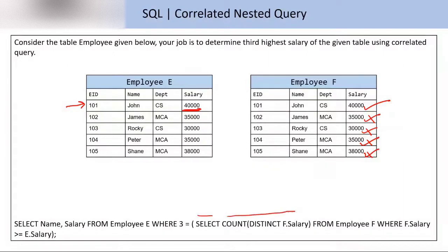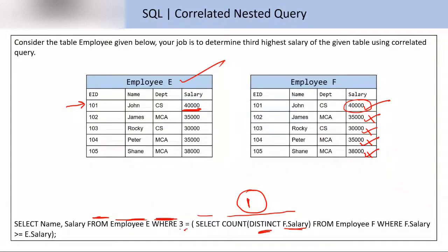Before SELECT there is an aggregate function: SELECT COUNT(DISTINCT f.salary). You have only one f.salary value — 40,000 — so the count value is one. The output of this inner query is 1. Now in the outer part, FROM table e, WHERE 3 = 1. Is 3 equal to 1? No — 3 is not equal to 1. So we discard this tuple. 40,000 is not the third highest salary. The third highest salary is 35,000.